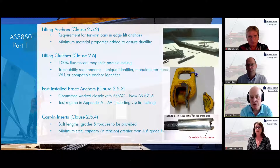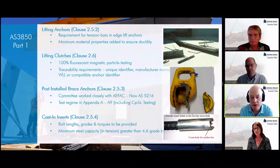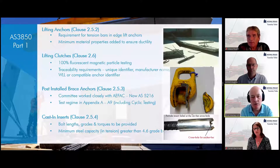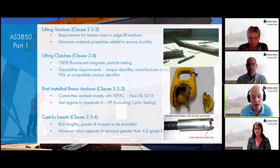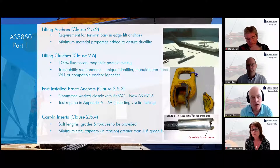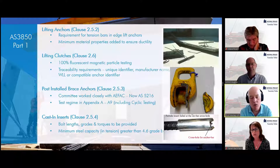Lifting clutches should be 100% magnetic particle tested. One problem with clutches — and here's one which has failed — is a brittle failure typical of material that's been poorly controlled for chemistry or heat treatment, or both. Sadly there have been many such failures. Magnetic particle testing doesn't catch these. The only way to avoid this type of failure is to buy products from the people who actually designed them, rather than from importers copying products with little understanding of what they're supposed to be for.